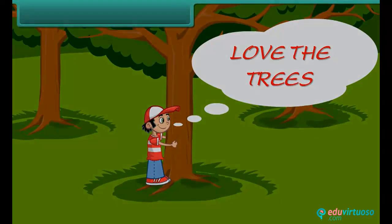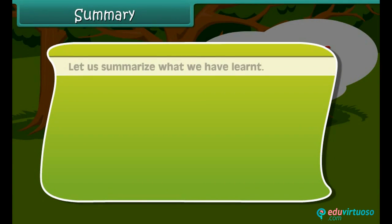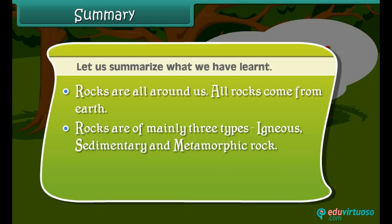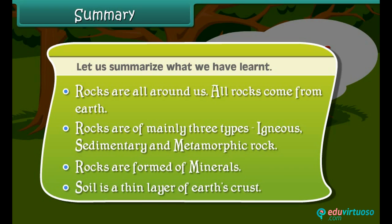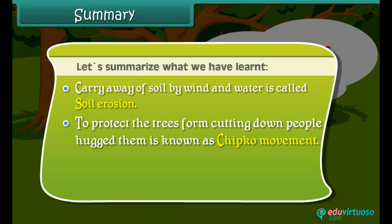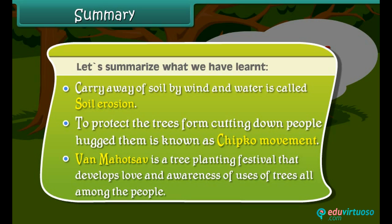Van Mahotsav also helps generate love and awareness of the uses of trees among the people. Let us summarize what we have learned: Rocks are all around us and come from the earth. Rocks are mainly of three types — igneous, sedimentary, and metamorphic. Rocks are formed of minerals. Soil is a thin layer of the earth's crust. The carrying away of soil by wind and water is called soil erosion. People hugged trees to protect them from being felled — this movement is known as the Chipko Movement. Van Mahotsav is a tree-planting festival that develops love and awareness of the uses of trees among the people.